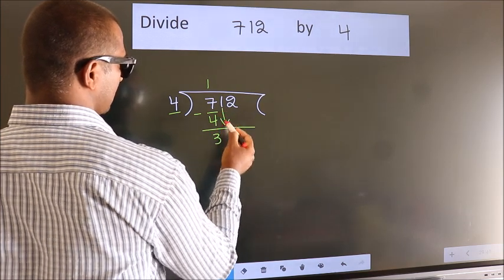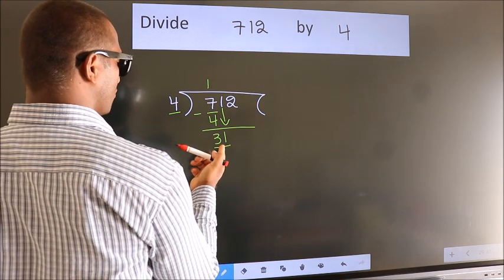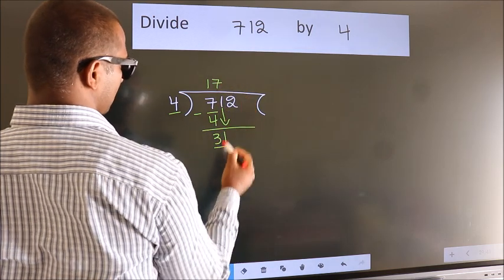Bring down the beside number, so 1 down. So 31. A number close to 31 in the 4 table is 4 sevens, 28.